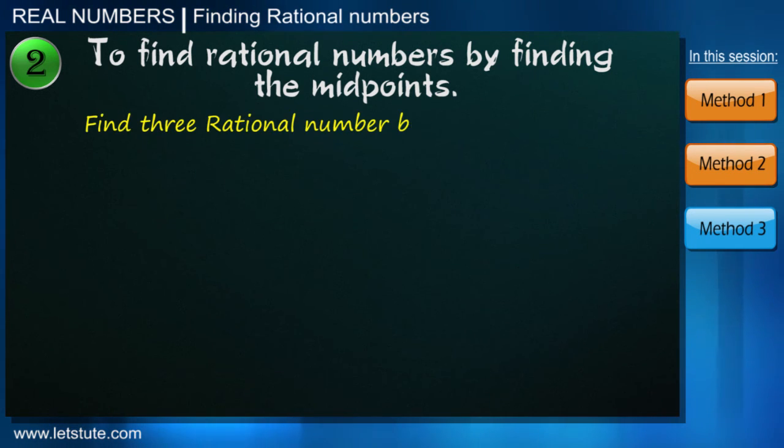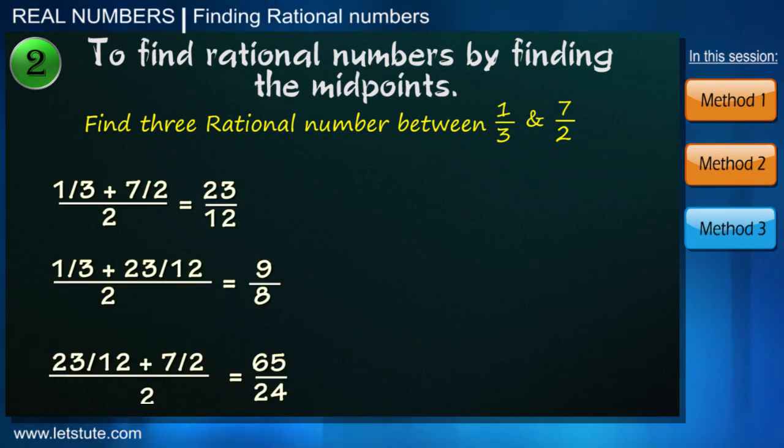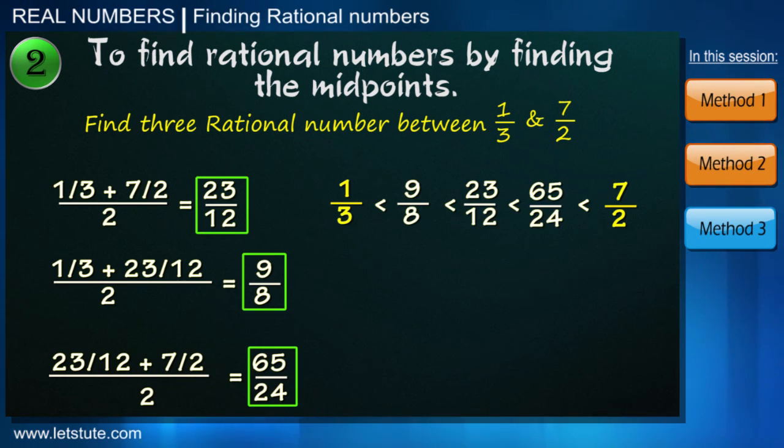Let's now say we want to find the three rational numbers between the fractions 1 by 3 and 7 by 2. So similarly even here we can just go on finding the midpoints which will give us three rational numbers between 1 by 3 and 7 by 2.